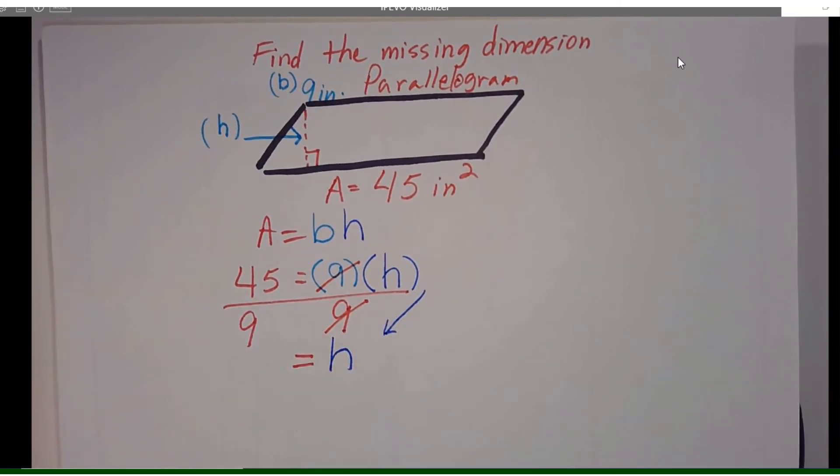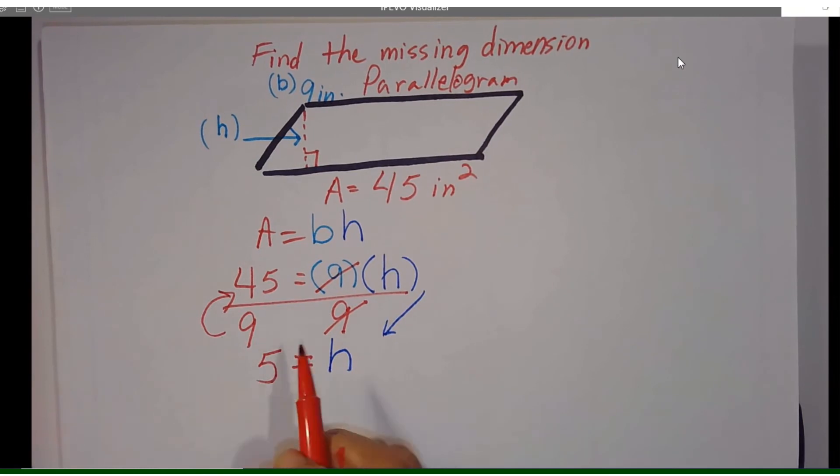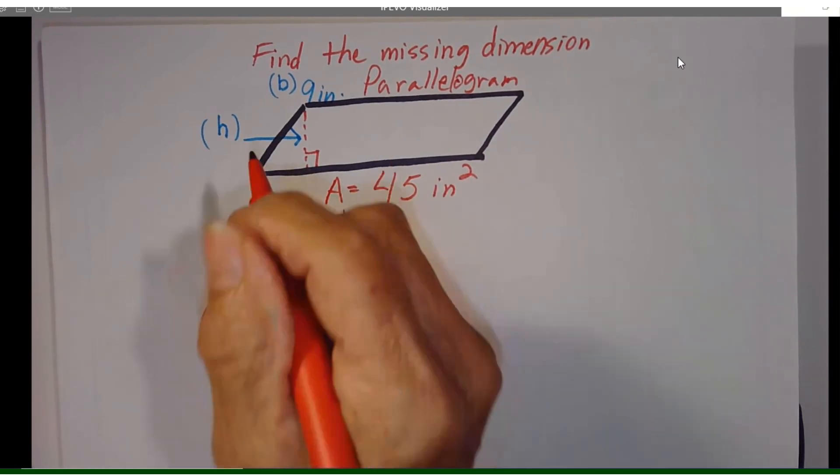We take this nine and we divide it into 45. Using your basic math facts we know that nine divided into 45 is five. So our height is five.